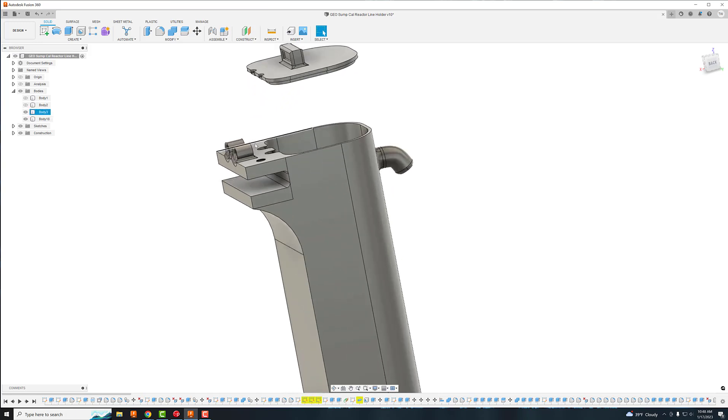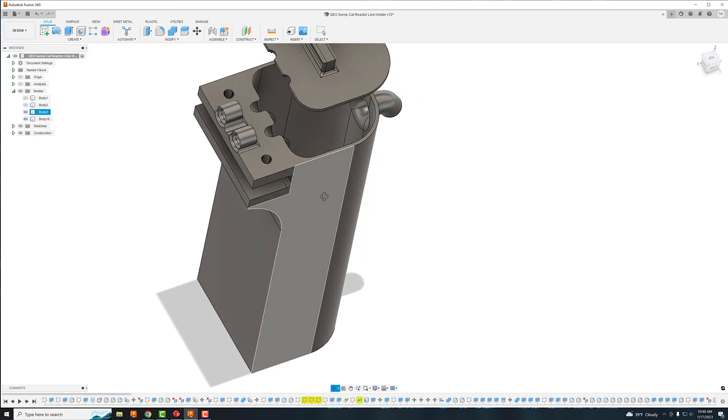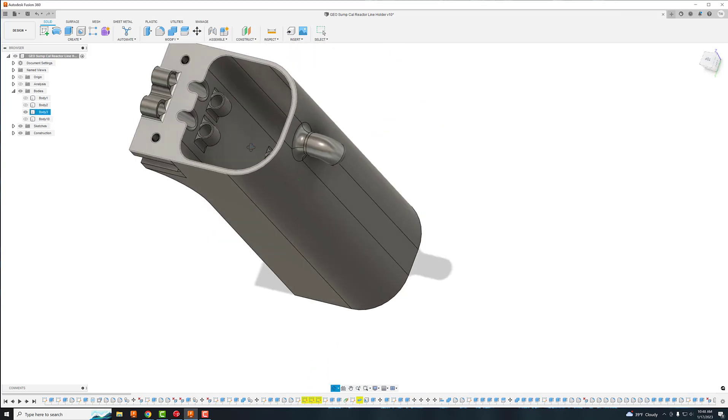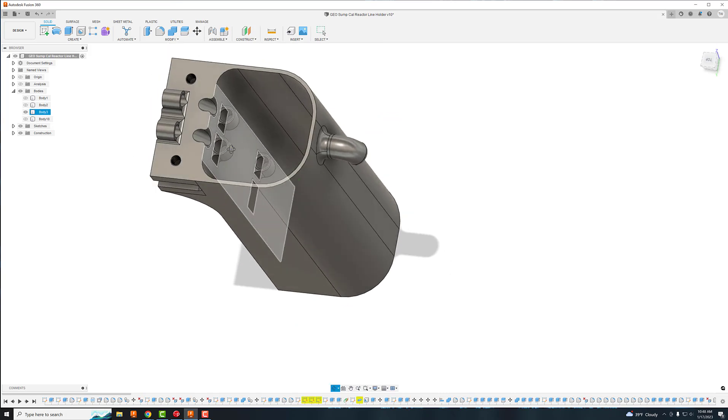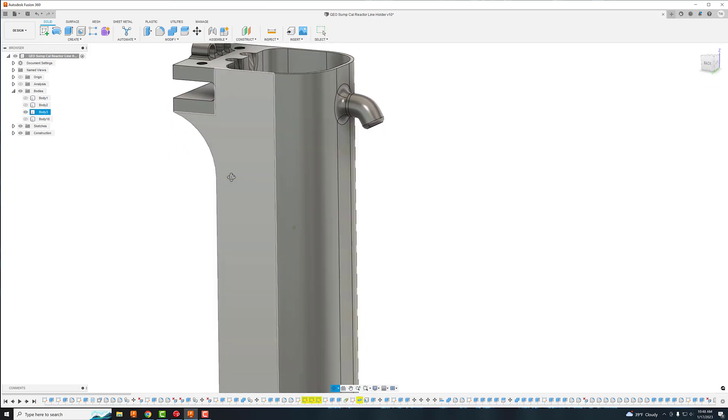The only thing I really don't like about it, which I can probably fix easily, is I want to extend this out a little bit more and make this angle not as sharp on top, because I do find the RO tube is kinked just a little bit. It's kind of a pain to get all the way in there.